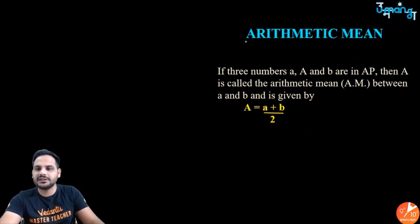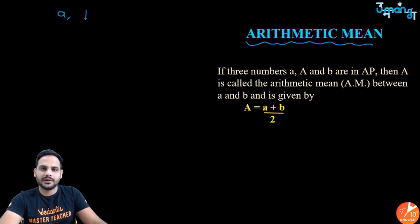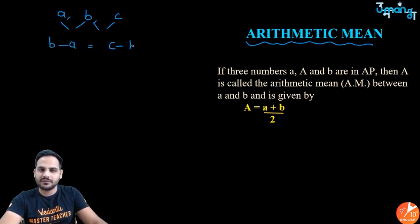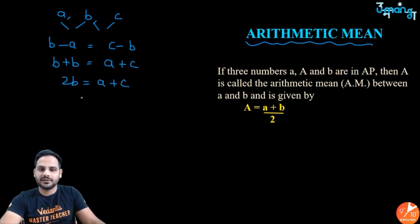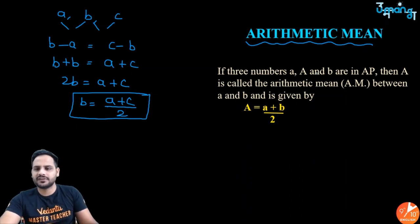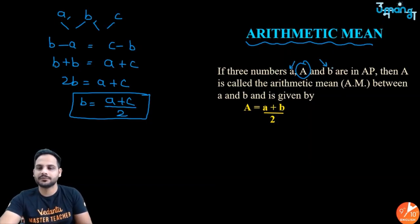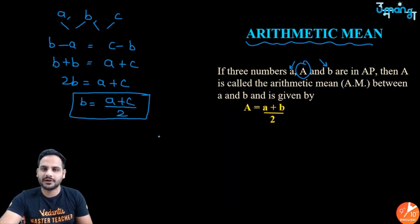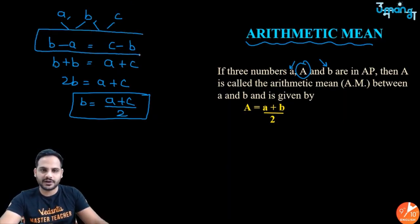Arithmetic mean: if three numbers a, b, c are in AP, then b − a = c − b, which gives 2b = a + c, so b = (a+c)/2. The middle term b is called the arithmetic mean of a and c.